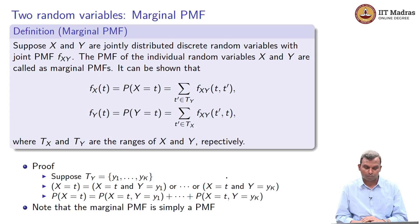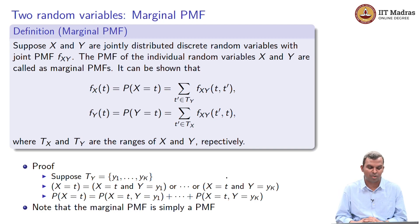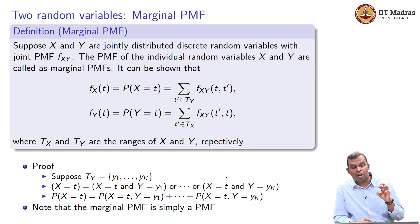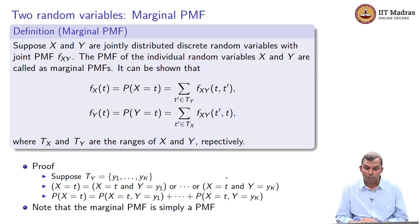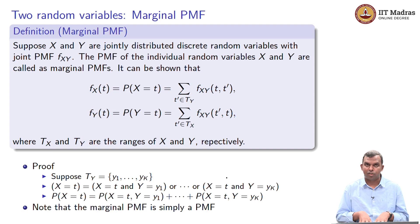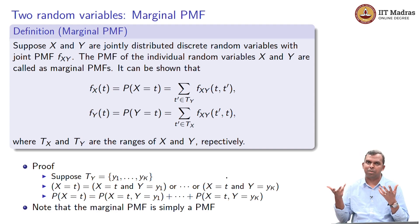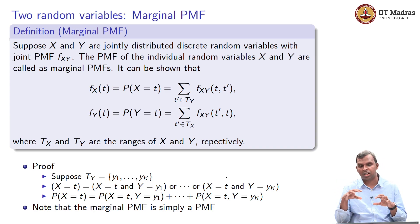Let us first define marginal PMF. It is not actually a major definition, but you will see it is easy to think of. I am going to start with two jointly distributed random variables. Let us say X and Y have a joint PMF f_{XY}. So the PMF of the individual random variables — you are given a joint PMF. You do not start with the marginal PMF; you start with the joint PMF. You do not start with the individual random variables; you start with the joint distribution of two random variables.